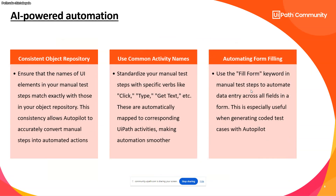For AI-powered automation, when Autopilot generates code based on test cases, there are specific considerations for UI automation. You need to create your object repository manually with proper, meaningful, and consistent naming conventions. The step names you define in manual test cases should match your object repository naming conventions so that Autopilot can directly consume existing object repositories. Otherwise, additional effort is needed to configure UI objects in the generated code.